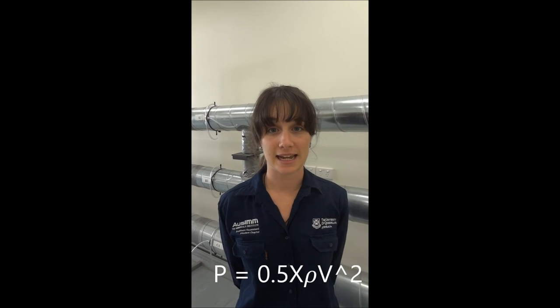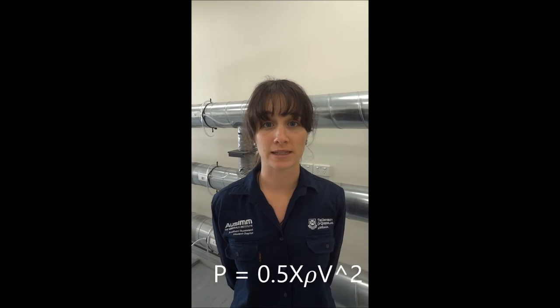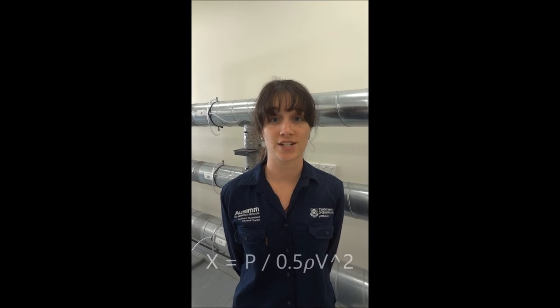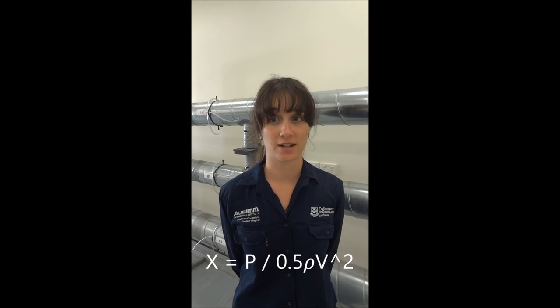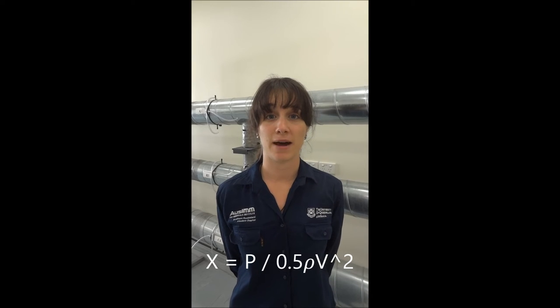The final section of the prac calculates shock losses through the bends and T-intersections of the duct through the formula displayed. Shock losses are losses caused by changes in the path of travel for the air, including bends, intersections, and changes in area of the duct. The shock loss factor x can be found by dividing the total static pressure by the velocity pressure.